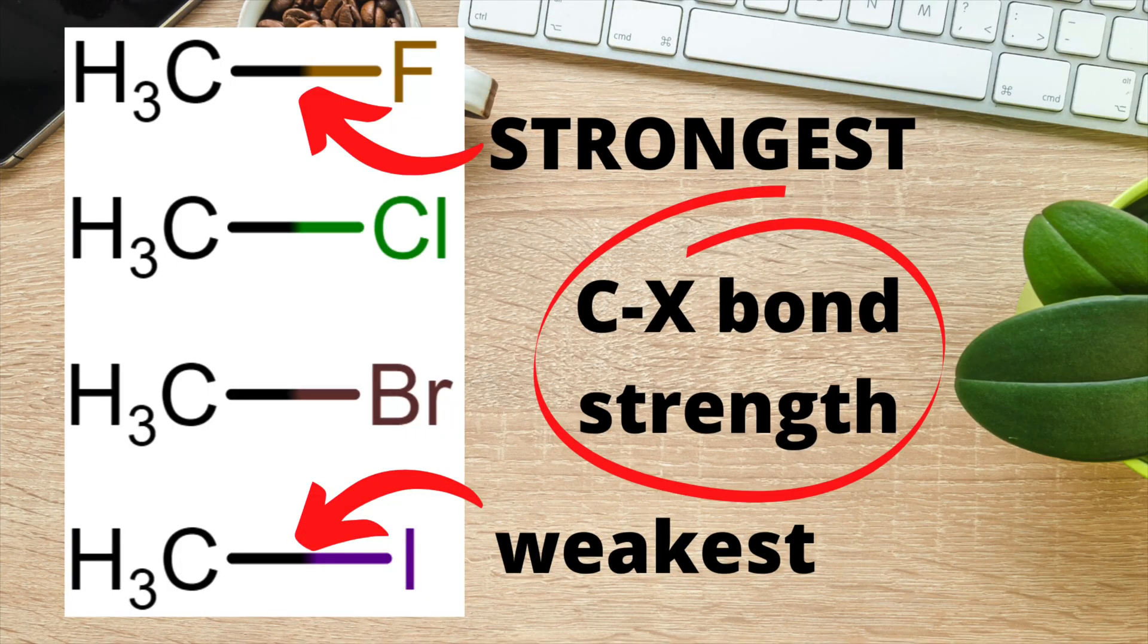Before we actually get started looking at the reactions of the haloalkanes, we need to know a little more about the differences in the strength of the carbon halogen bond. The haloalkanes are a bit different from the other organic functional groups we have seen so far in module 4, because the atom at the end of the bond with the carbon can be any of the halogens from group 7. There is a trend in the strength of the carbon halogen bond. The carbon to fluorine bond is the strongest and then they decrease in strength down the group with the weakest being the carbon to iodine bond.